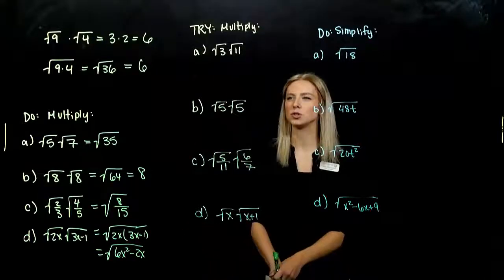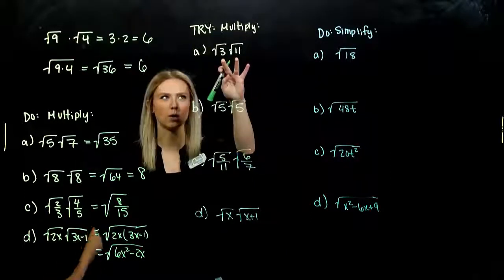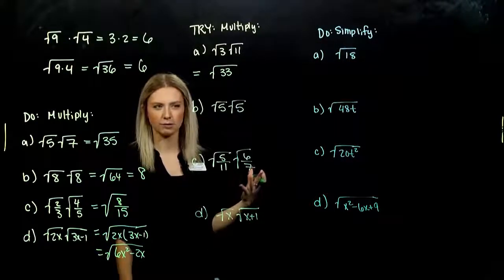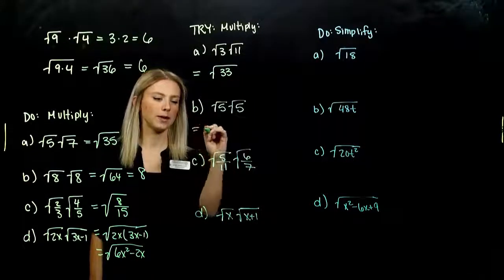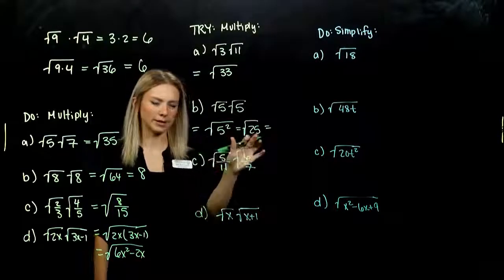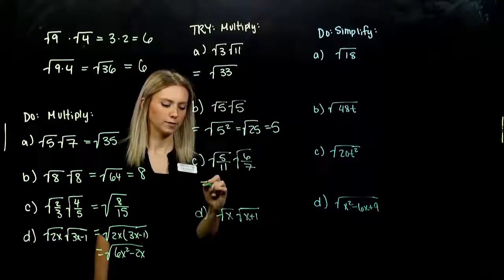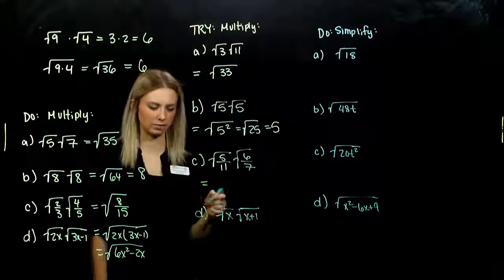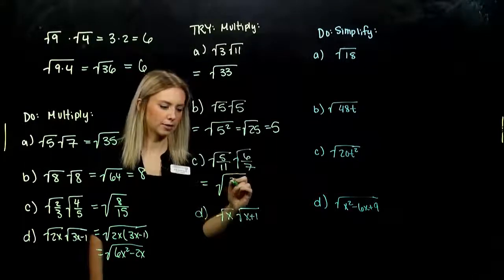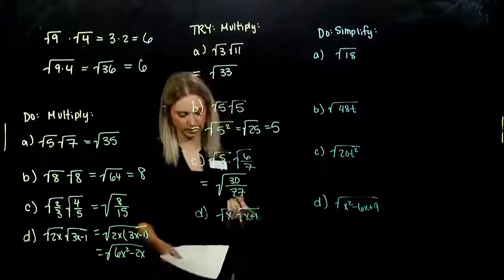Go ahead and try parts A through D: multiply and simplify if you can. For part A, we couldn't evaluate √3 or √11 individually, and multiplying gives √33, which we can't simplify further — we'd have to approximate. For part B, √5 times √5 is the square root of 25, which evaluates to 5. For part C, multiplying across gives 30 over 77 under the radical, and again we can't simplify, so we leave it.